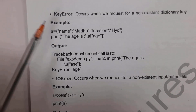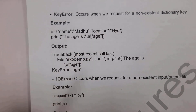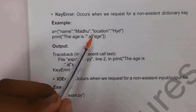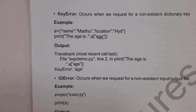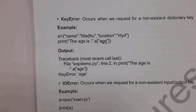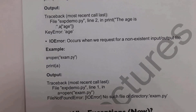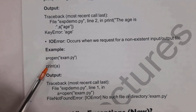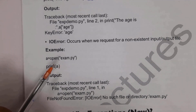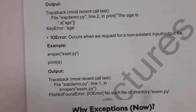KeyError: if a dictionary has keys 'name' (value 'madhu') and 'location' (value 'hyderabad'), and you write print(a['age']), since 'age' is not a key in the dictionary, it will display 'KeyError: age'. IOError (input/output error): if you try to open a file that doesn't exist — for example, a = open('exam.py') — and print(a), since the file isn't present you get 'IOError: No such file or directory: exam.py'.